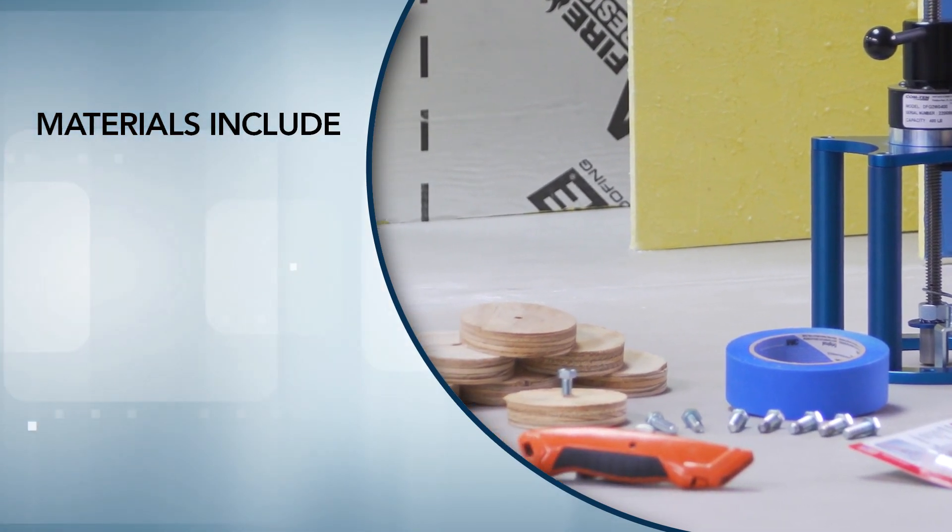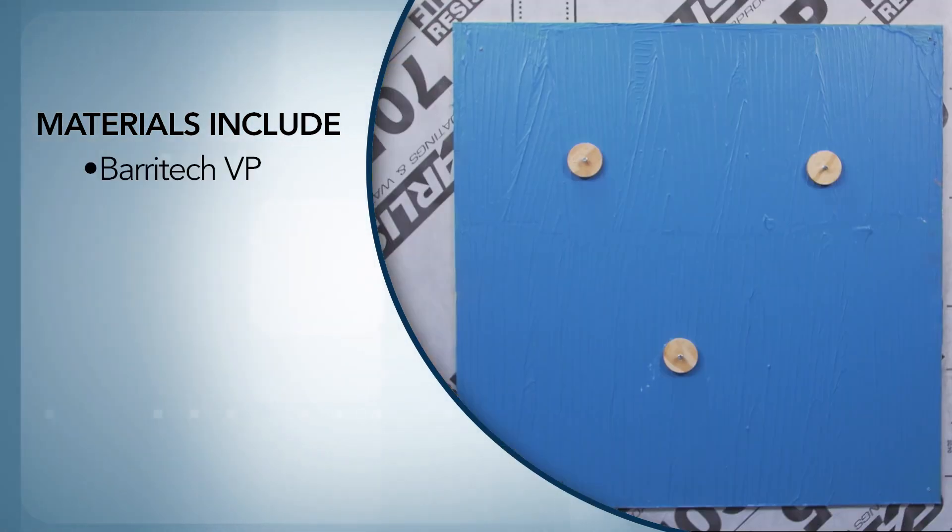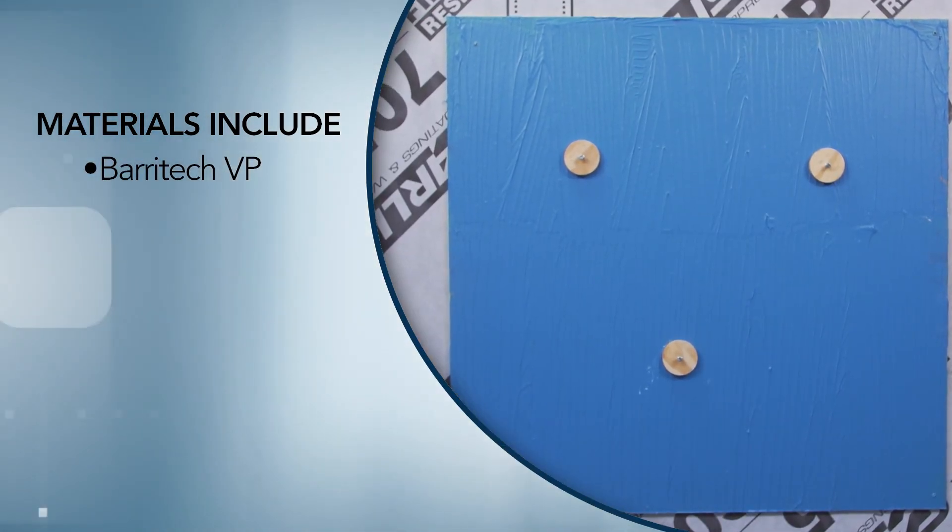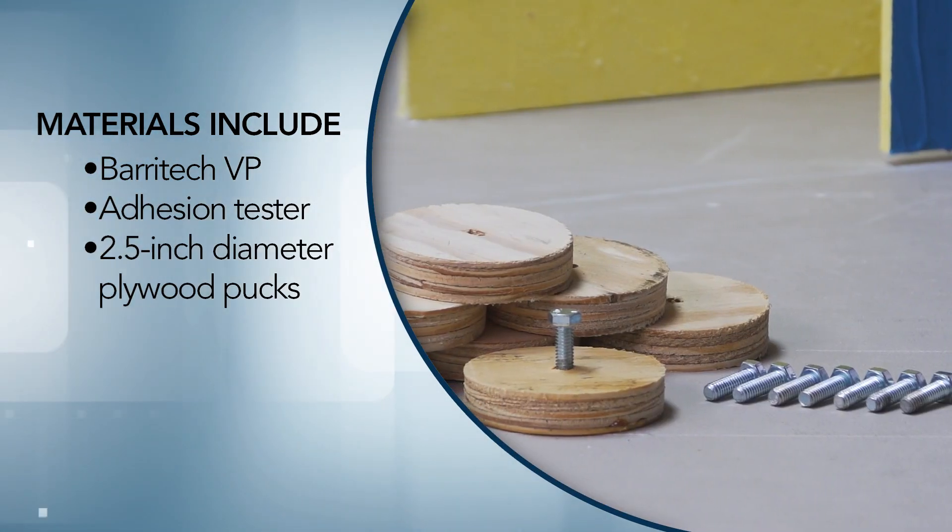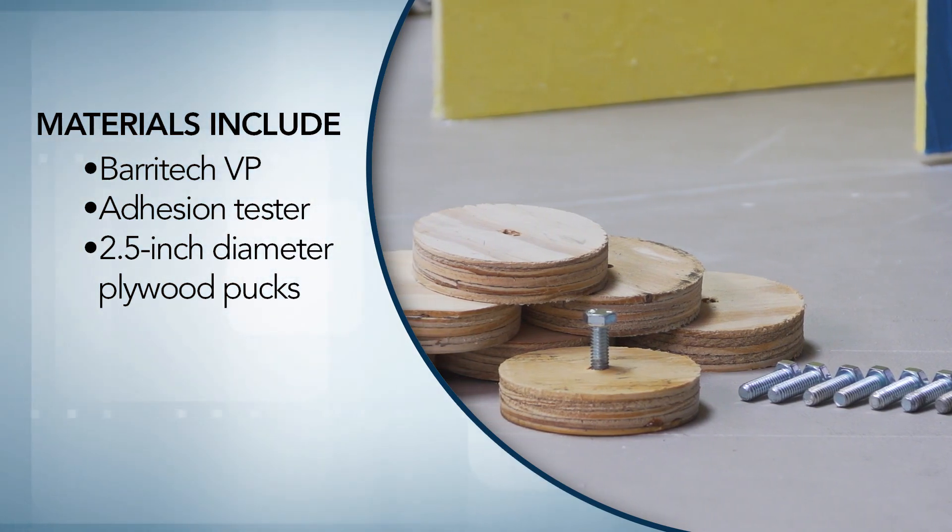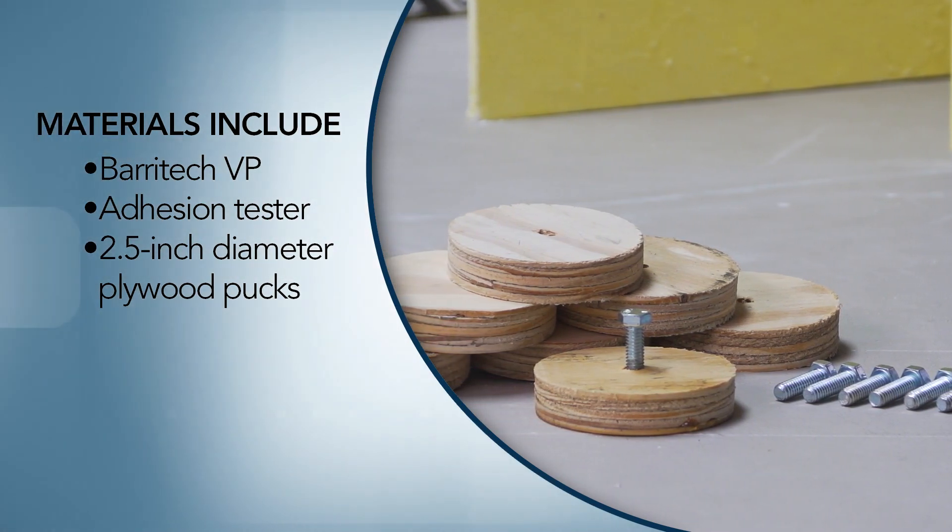Materials we use to perform this adhesion pull test include Baratech VP cured at least 48 hours before the test, one pull-off adhesion tester, and six or more 2.5-inch diameter plywood pucks with a center-attached screw which will be used to engage the pull tester.